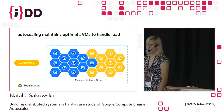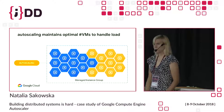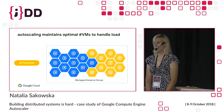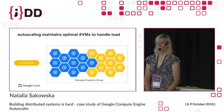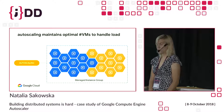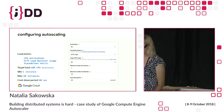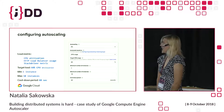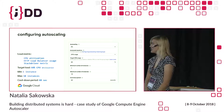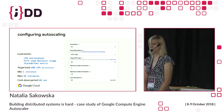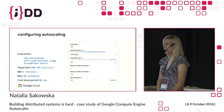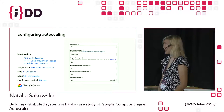GCE Autoscaler does exactly this: whenever there is higher load, it adds more instances, and when your instances are idle, it deletes them — so all your customers are happy and served, but you don't need to pay for unused compute power. How do you configure Autoscaler? You have three possible metrics to scale by: CPU utilization, HTTP load balancer, or Stackdriver metric. You can actually combine and use multiple metrics.